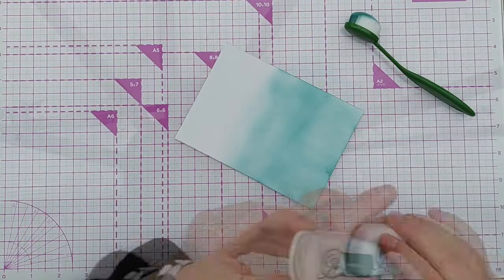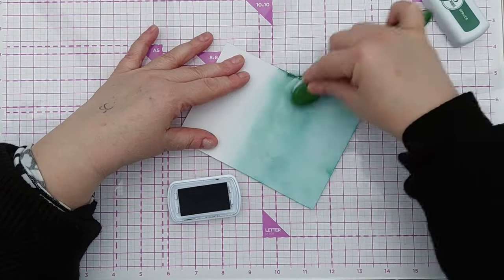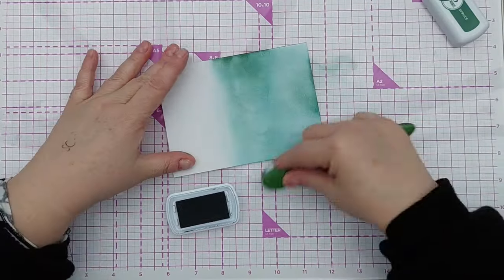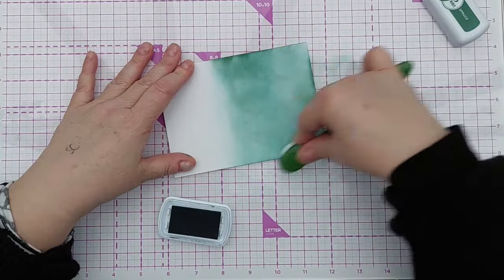The inks I'm using are from the Catherine Pooler Spa Collection. I chose these because they're soft and muted and suited the feel of the sending love theme.